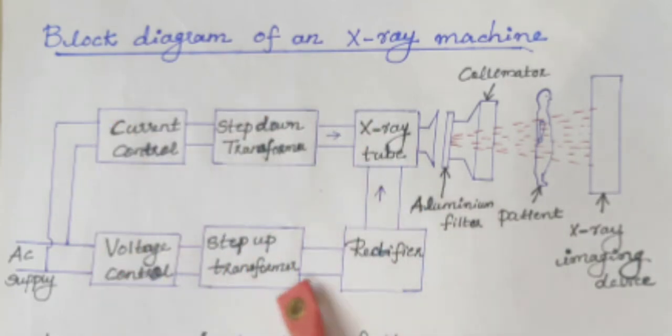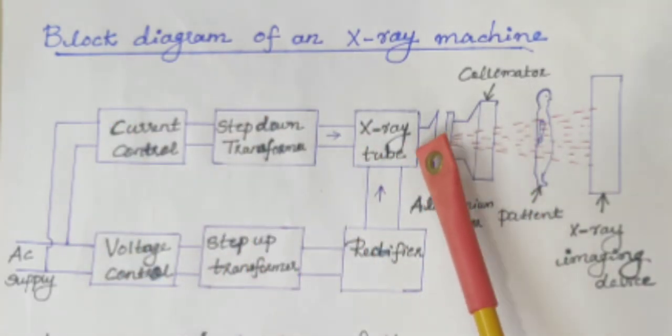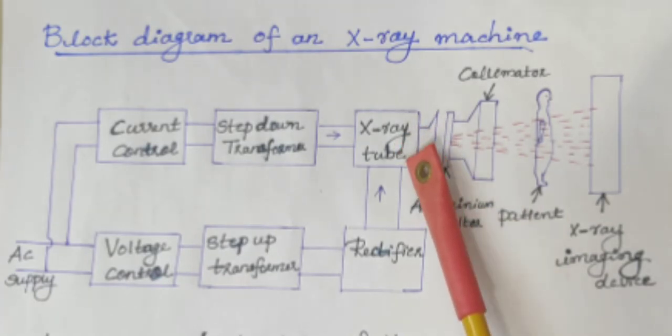So first one is the power supply arrangement. In the last class we already discussed the working of x-ray generator or x-ray tube. The x-ray tube consists of anode and cathode.